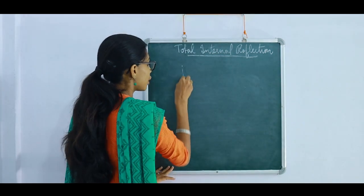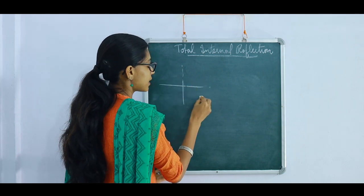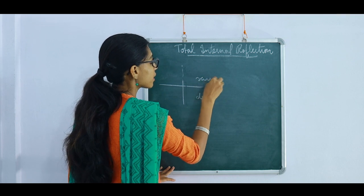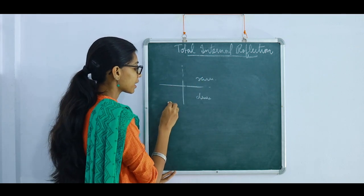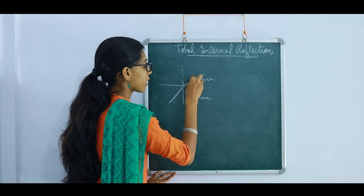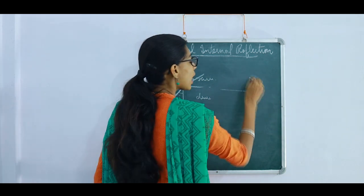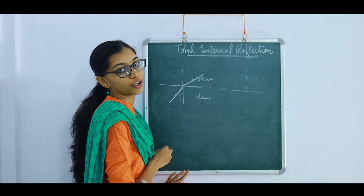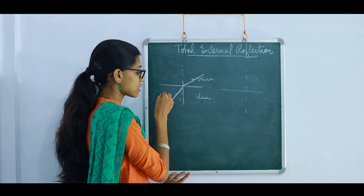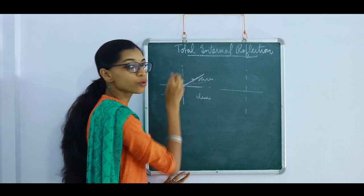A light ray which goes from a denser medium to a rarer medium bends — it goes away from the normal. So let's take an incident ray. You have a normal, you have a surface. This is the denser medium and this is the rarer medium. A light ray comes and falls on this and goes away from the normal. This is your angle of incidence. Now I further increase the angle of incidence — when I increase it, the angle of refraction also increases.